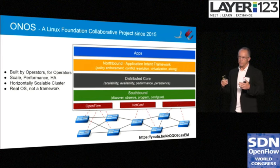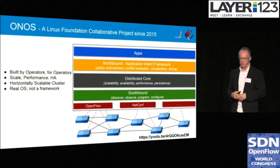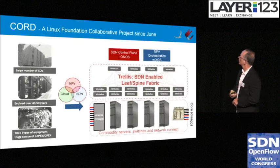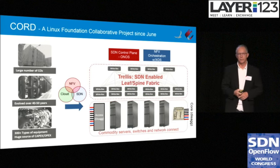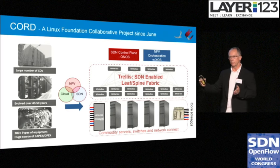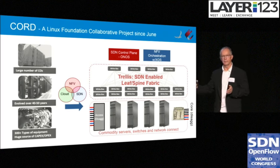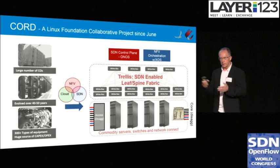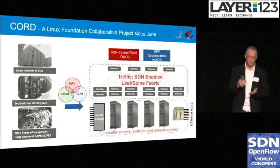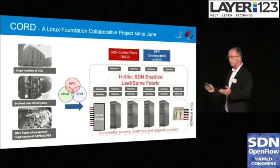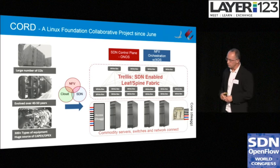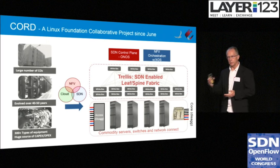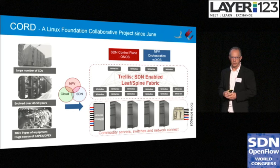ONOS also has very strong abstractions at the southbound to make it easy to add devices into the network. CORD started as a use case on ONOS, built out through operator use cases working with our operator partners. CORD was one that attempted to really make a dent in the operational costs of AT&T's network, because AT&T alone has almost 5,000 central offices. Our goal was to apply SDN, NFV, and cloud to those central offices to bring cloud agility and data center economics into them.